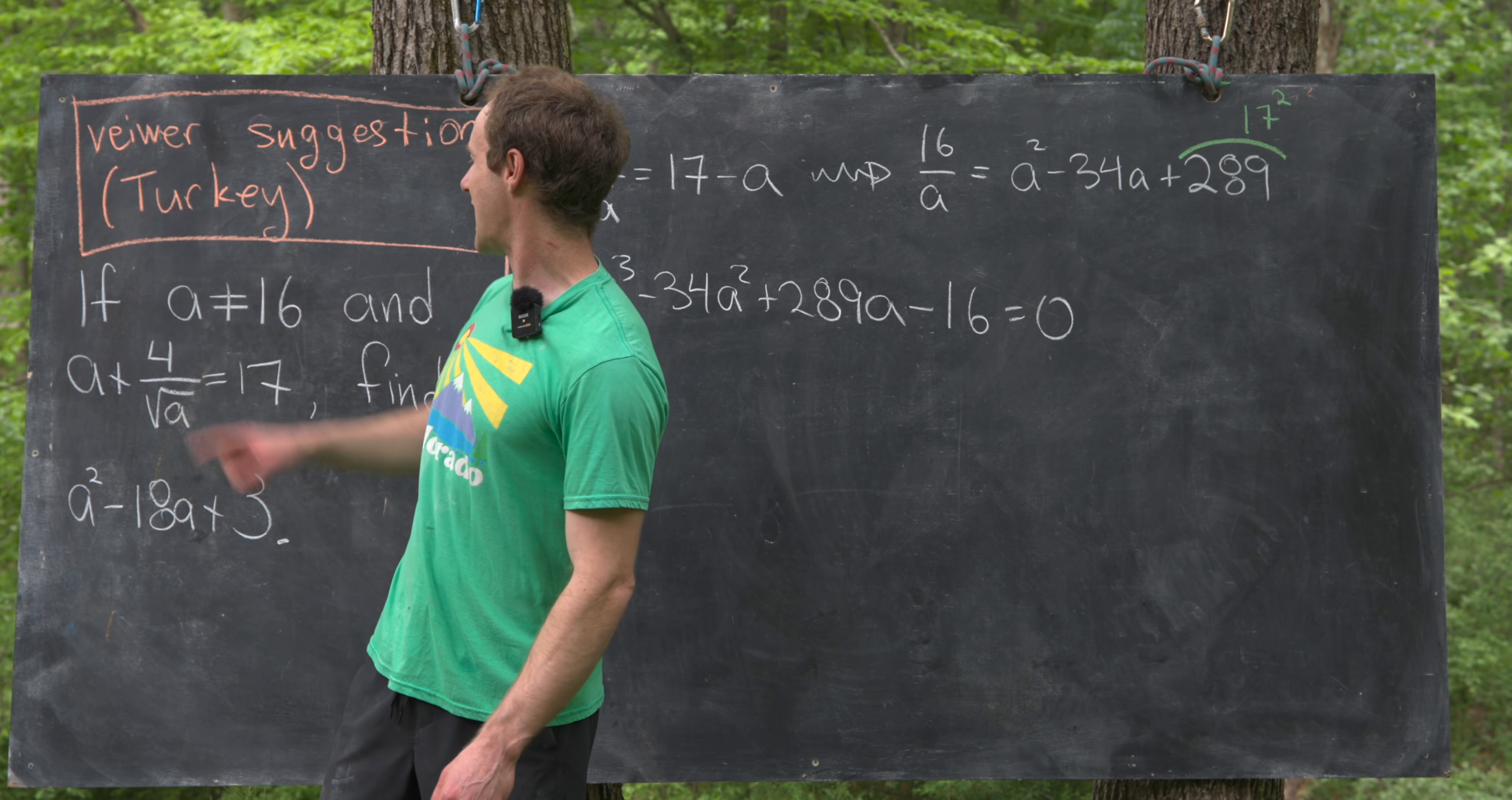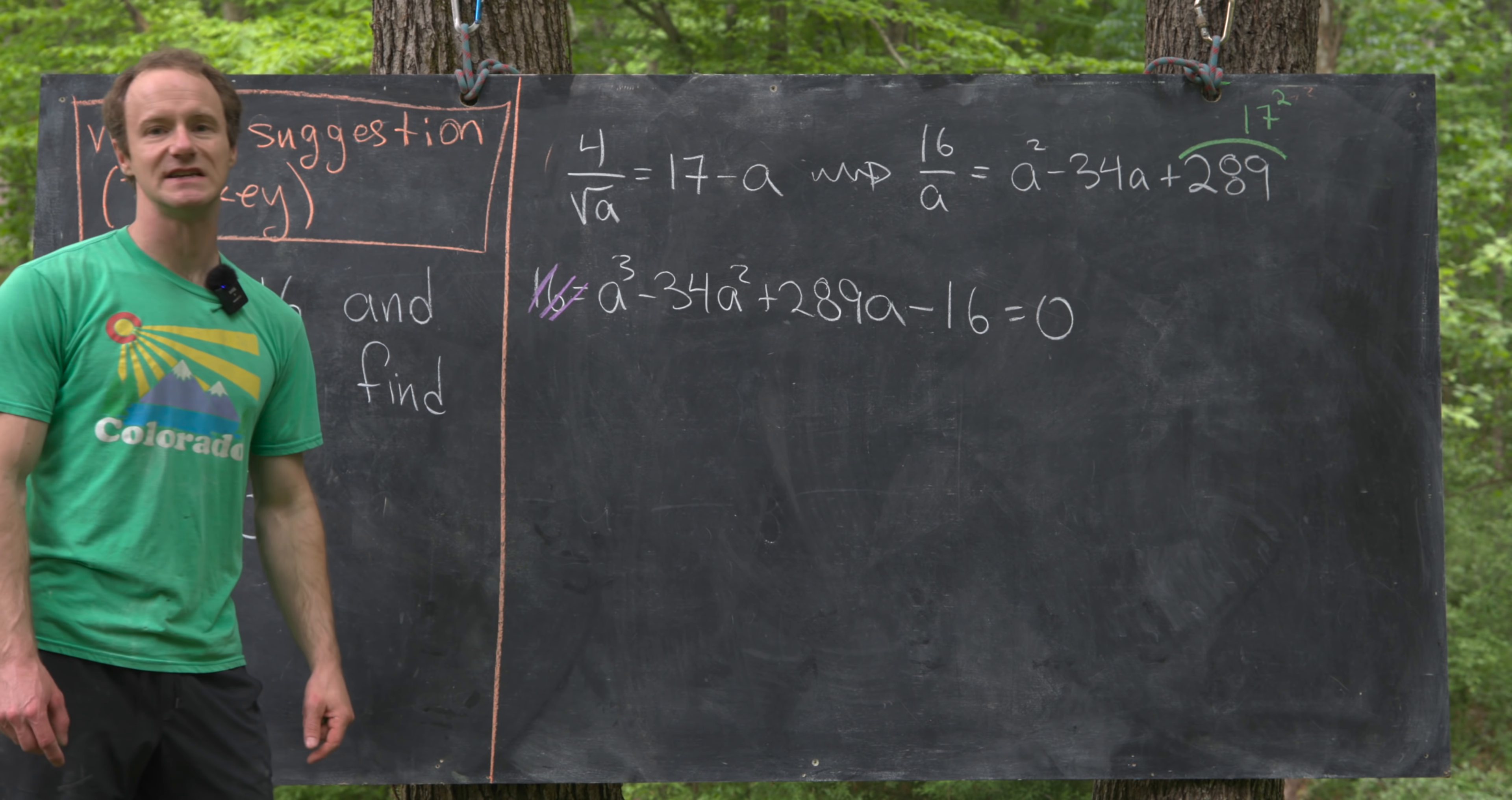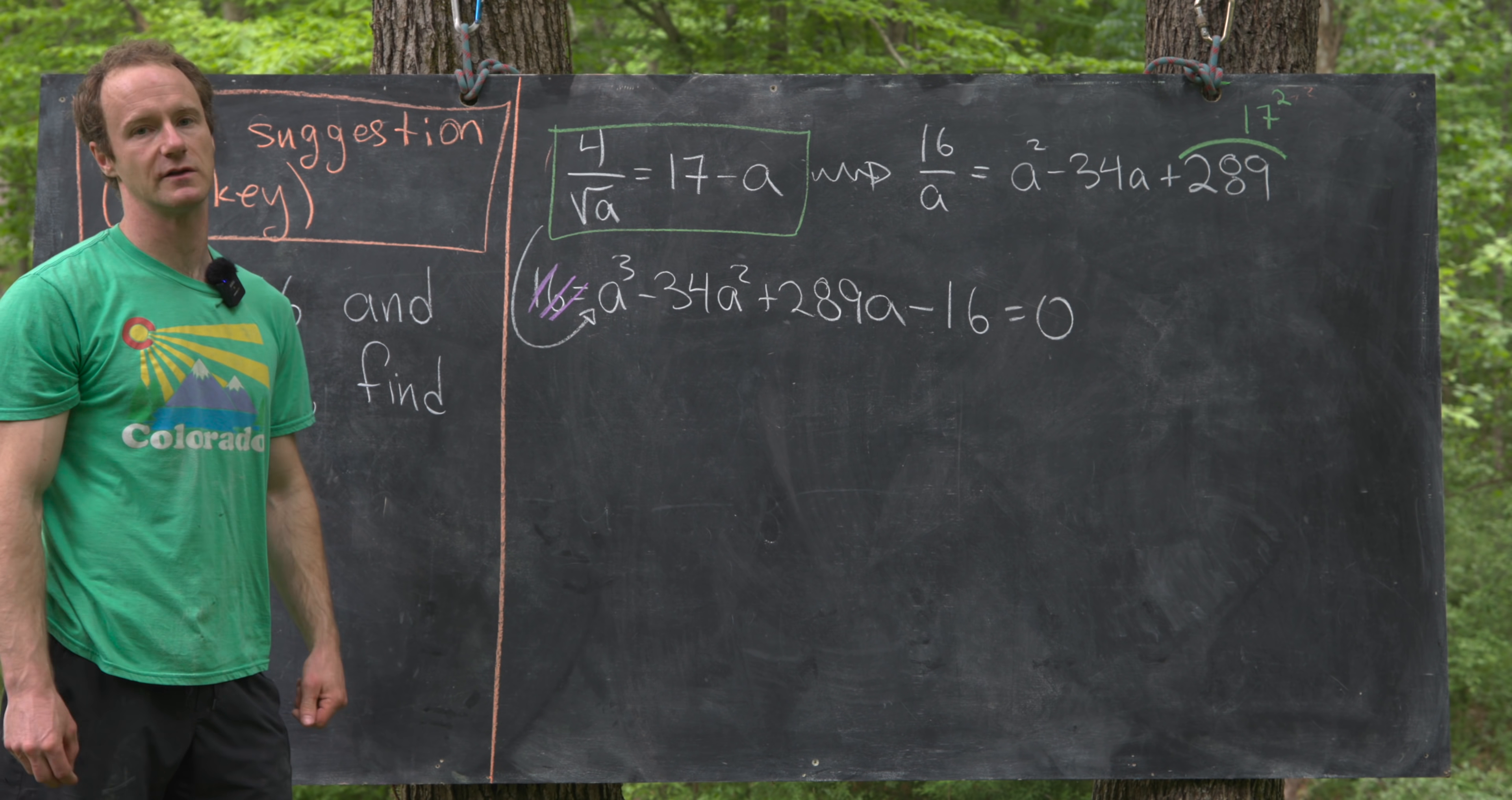Notice that we're supposed to assume that a is not equal to 16. And that's because a equals 16 is a really obvious solution to this equation right here. Notice we'd have 4 over the square root of 16, that's 4 over 4, which is 1, equals 17 minus 16, that's also equal to 1. But the fact that 16 is a solution to this initial equation, and we've manipulated this initial equation into this cubic polynomial, that means 16 is also a root of this cubic polynomial.